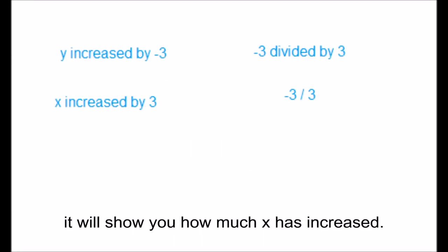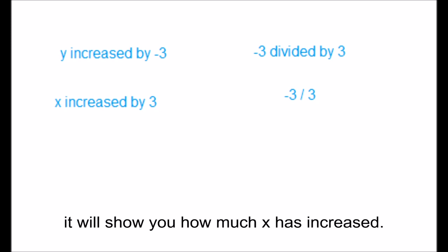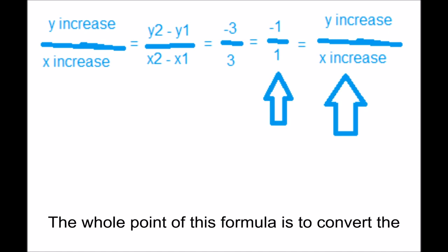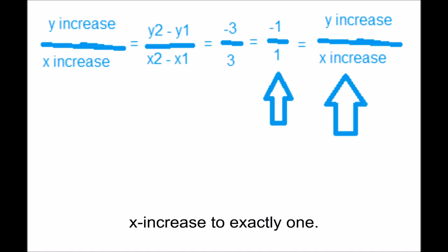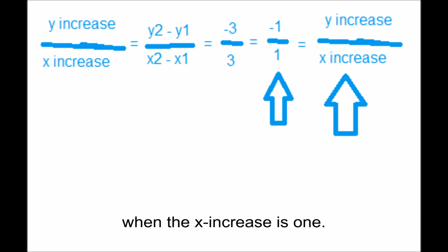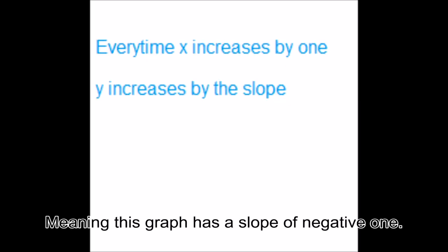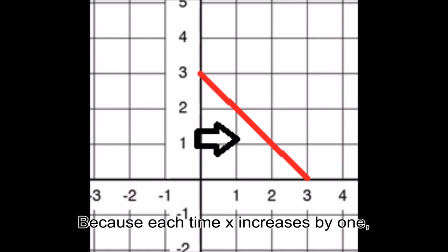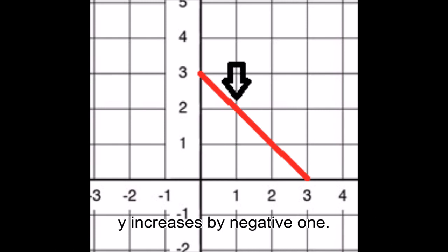If you do the same thing with x it will show you how much x has increased. And by dividing the two increases like so, will result in how much y increases when x increases by 1. Take a look at the math. The whole point of this formula is to convert the x increase to exactly 1. And therefore we discover our slope is the y increase when the x increase is 1. Meaning this graph has a slope of negative 1. Because each time x increases by 1, y increases by negative 1.